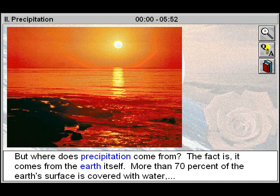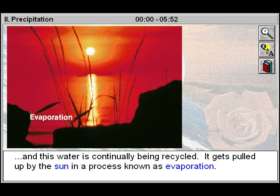But where does precipitation come from? The fact is, it comes from the Earth itself. More than seventy percent of the Earth's surface is covered with water, and this water is continually being recycled.